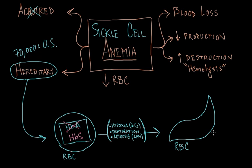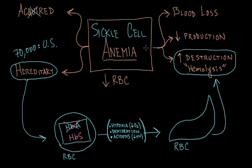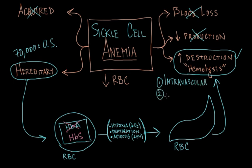Once the red blood cells cycle between the normal form and the sickled form, they become particularly vulnerable to destruction. So patients with sickle cell disease are not anemic because they're losing blood or because they have problems producing red blood cells — they're anemic because their red blood cells are being destroyed due to their shape. There are two places where this hemolysis occurs: inside the blood vessels, called intravascular hemolysis, or outside of blood vessels, called extravascular hemolysis, which mainly happens in the spleen.